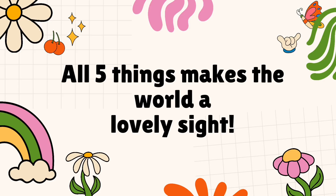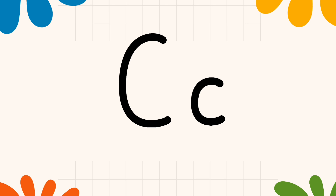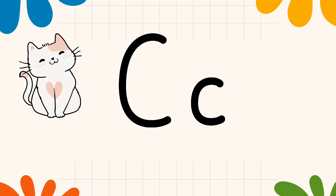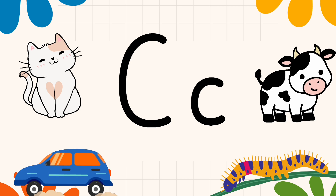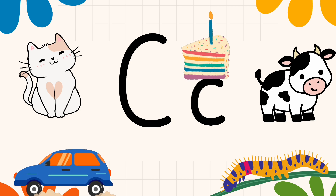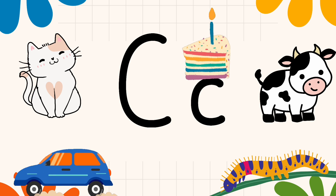All five things make the world a lovely sight! So let us revise one last time: C is for cat, car, caterpillar, cow, and cake.